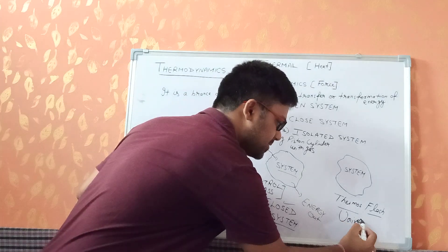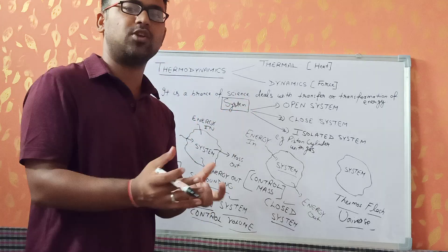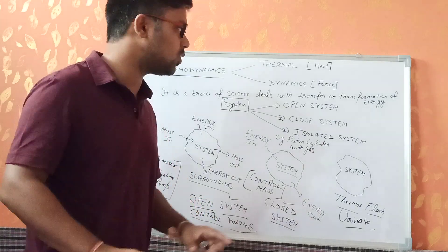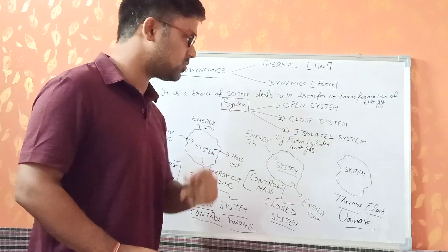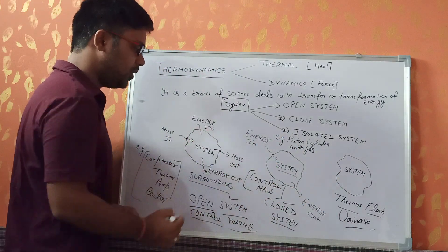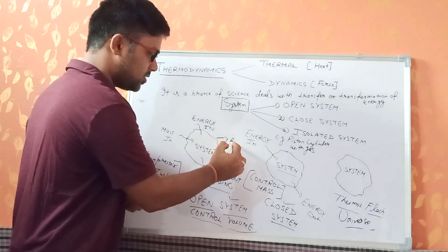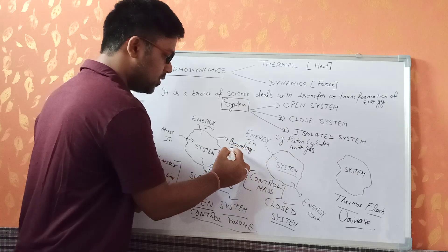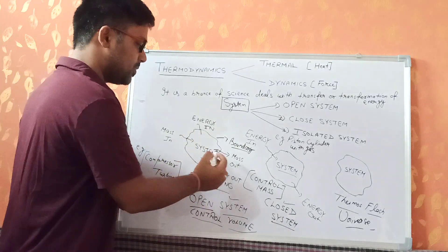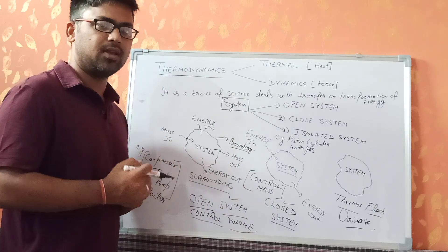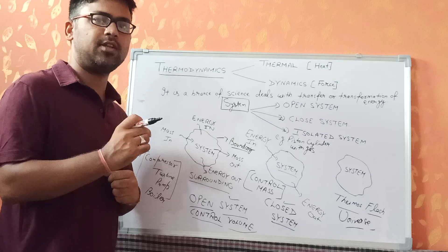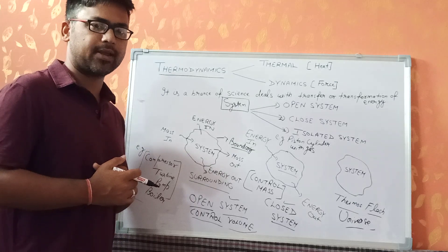Even our universe is the best example of an isolated system — everything is contained within the universe, so neither mass nor energy can be exchanged beyond it. To summarize: open system is also known as control volume system; closed system is also known as control mass system; and the third is isolated system. The wall that separates the system from the surrounding is called the boundary — it can be imaginary or real. In the next lecture we will study different thermodynamic properties. Please write any queries in the comment section and subscribe to the channel.